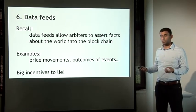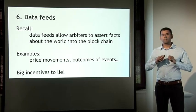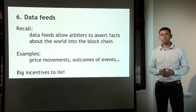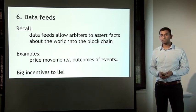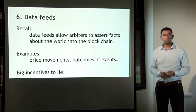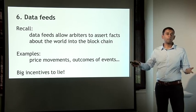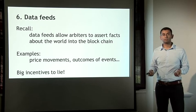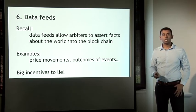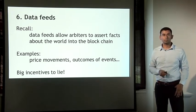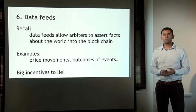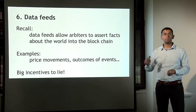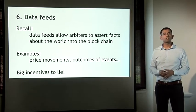Allowing arbiters to assert facts is already a step better than having a single designated entity creating all data feeds — this is a form of decentralization through competition between arbiters. You can also use trusted hardware: for example, a script that parses finance data from finance.google.com to create a data feed of stock movements, placed on trusted hardware so anybody can verify the script is doing what it claims. This still requires trusting that Google isn't lying, and you have to rely on HTTPS for security.